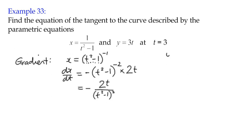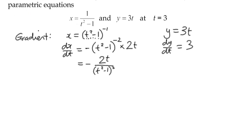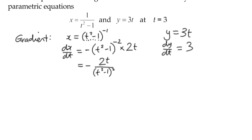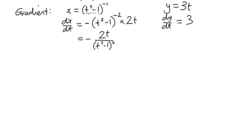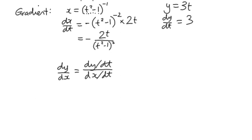The y term is more straightforward — our y function is 3t, so dy/dt differentiates to 3. We now have one fraction among our two derivatives. Normally in that kind of situation, you can write dy/dx by placing the two terms one on top of the other in a fraction, which works well if there are no fractions involved.